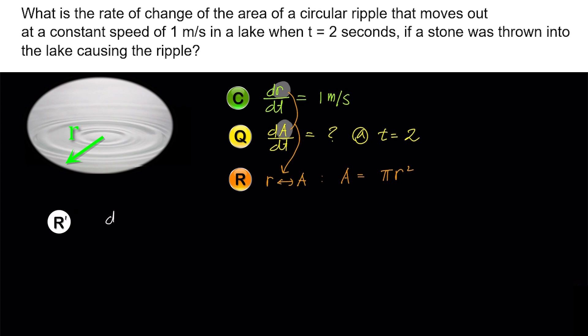Now for the last step, let's differentiate the relation we found with respect to time. Applying implicit differentiation, we get dA/dt equals d(π r²)/dt. So dA/dt equals 2π r times dr/dt.